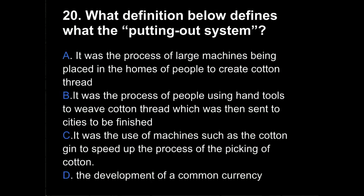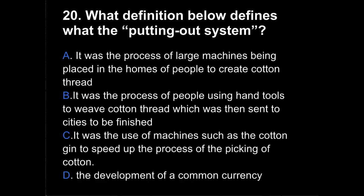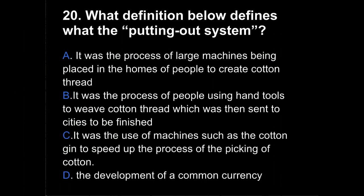Question 20. What definition below defines what the putting-out system was? A, it was the process of large machines being placed in the homes of people to create cotton thread. B, it was the process of people using hand tools to weave cotton thread, which was then sent to cities to be finished. C, it was the use of machines, such as the cotton gin, to speed up the process of the picking of cotton. Or D, the development of a common currency.